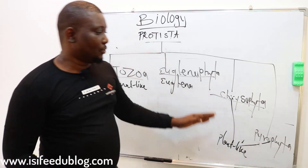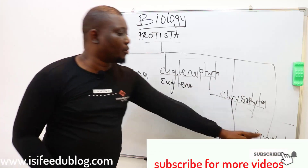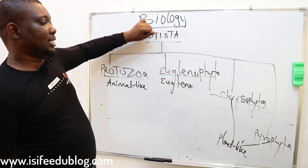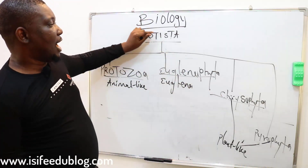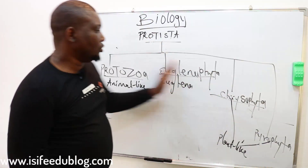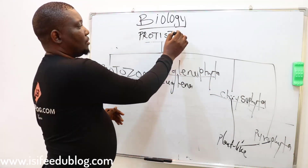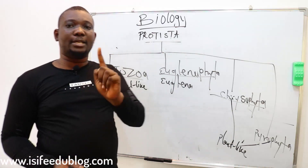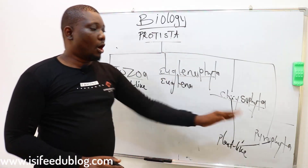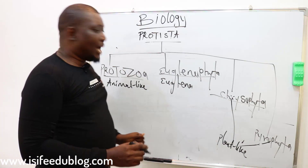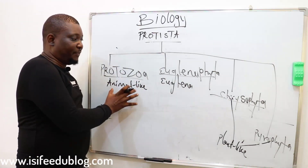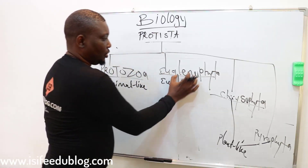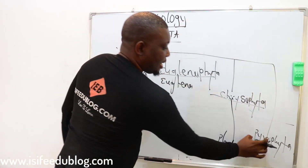What connects these four phyla under the umbrella body Protista is that these organisms are all unicellular single-cell organisms. We're going to look at the characteristic features of each phylum: Protozoa, Euglenophyta, Chrysophyta, and Pyrrophyta.